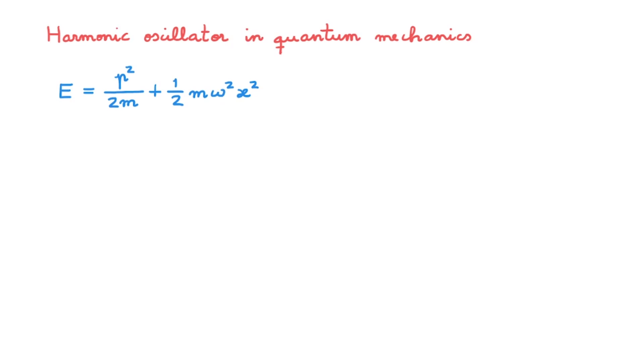To move to quantum mechanics, all we have to do is to promote the position and momentum to the corresponding operators. This means that we can write down the Hamiltonian of a quantum harmonic oscillator like this. What we'll do in this series of videos on the quantum harmonic oscillator is to study the properties of this Hamiltonian.